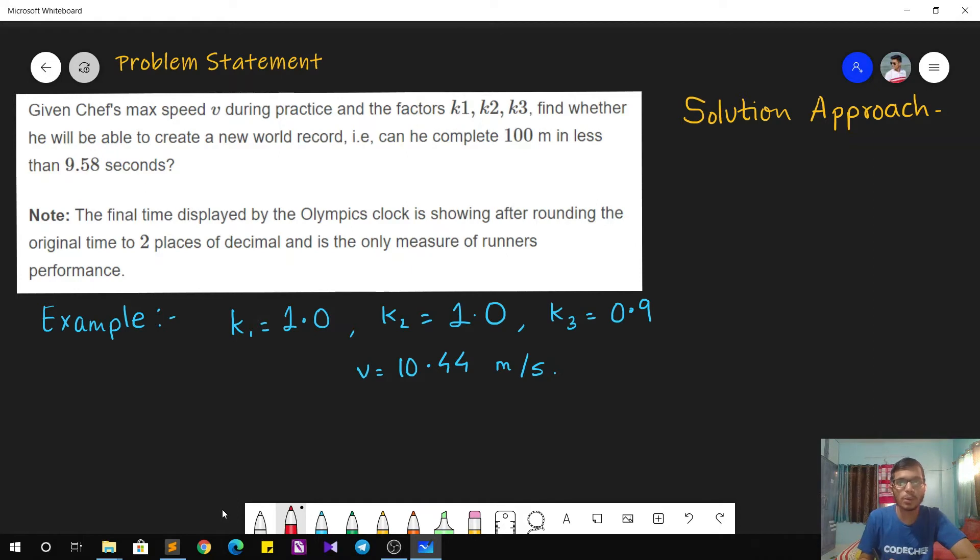The problem statement goes as follows: we are given Chef's max speed V during the practice and the three factors K1, K2, K3 affecting the speed. Based on this data, we have to find whether Chef will be able to create a new world record. That is, can he complete 100 meters in less than 9.58 seconds?